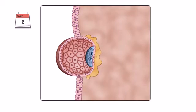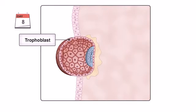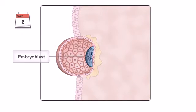At this time, it is composed of two main components: the outer cell mass, the trophoblast, and the inner cell mass, the embryoblast.